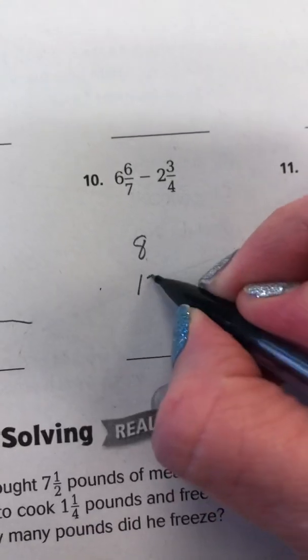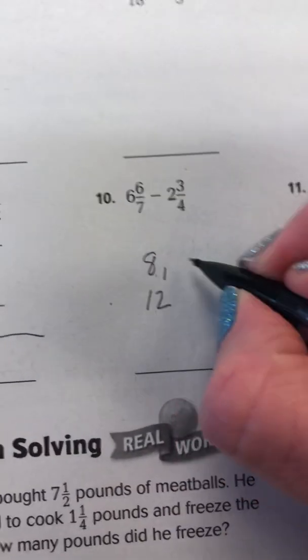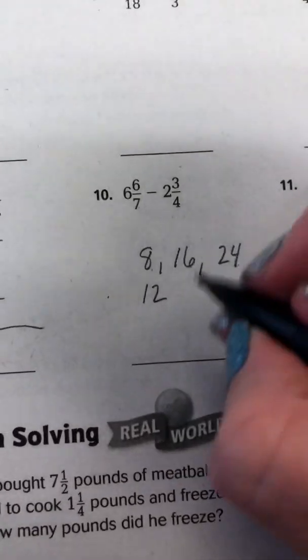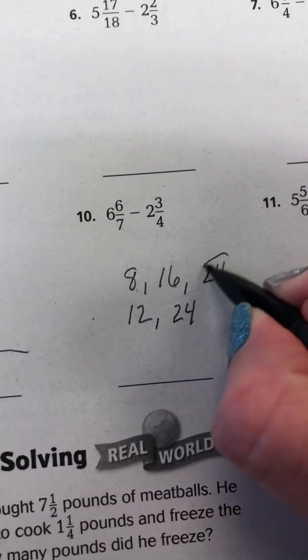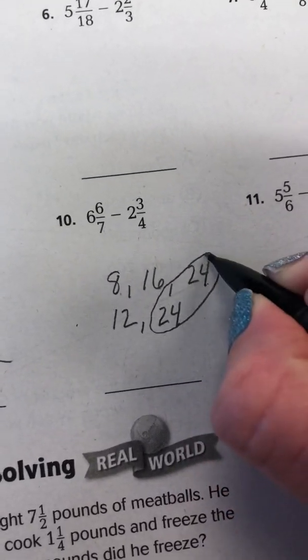I'll go ahead and do that here. So 8, 16, 24, 12, 24. So we have found our least common denominator, 24.